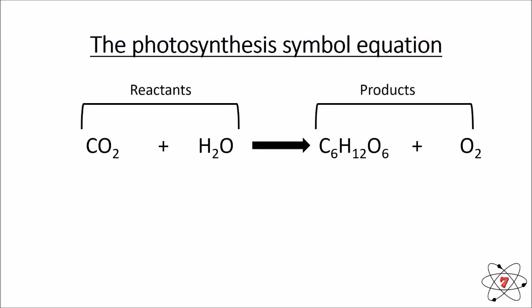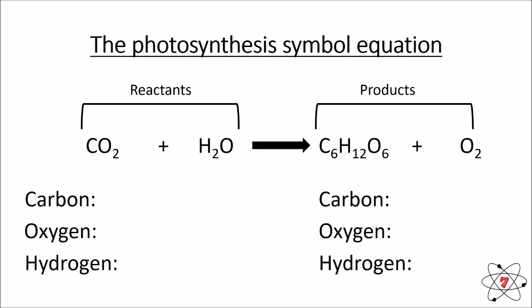Our reactants are carbon dioxide and water; our products are glucose and oxygen. Now we want to balance this equation, ensuring we have the same number of each element on each side. We need equal numbers of carbon, oxygen, and hydrogen atoms before and after the reaction, because the law of science states that in a chemical reaction we cannot create or destroy matter — we can only change it.